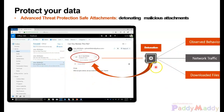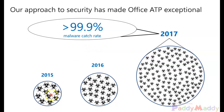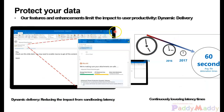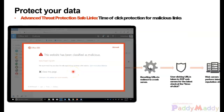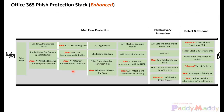For example, if there's an email, it will automatically detonate and absorb the behavior, network activity, and downloaded files, and save attachments automatically. The malware catch rate is growing to 99.9% and this can all be done in an average of 60 seconds. Features that limit the impact on user productivity with dynamic delivery happen automatically, and you get a notification in your inbox if a specific attachment or email is flagged as not safe. Some are completely blocked, some are enabled — so you protect your data.